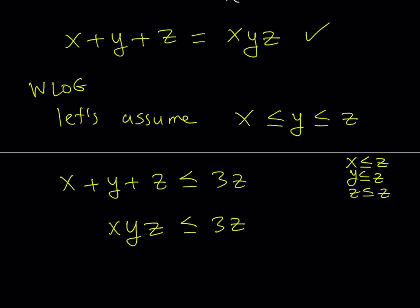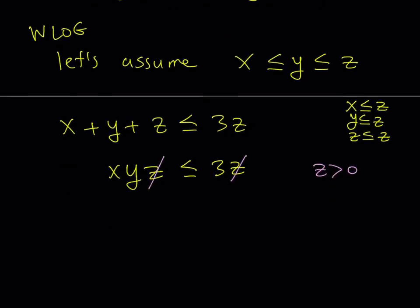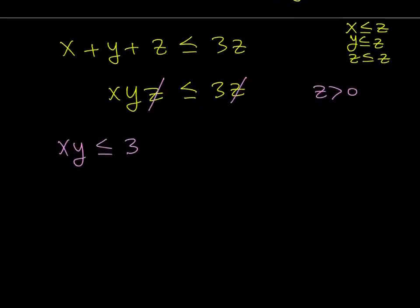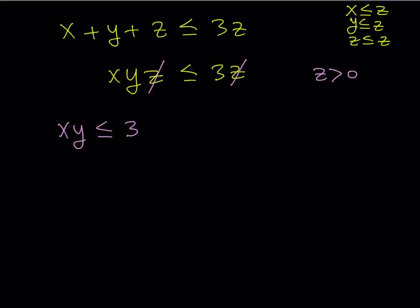I'm looking for positive integer solutions. So z is a positive integer, x is a positive integer, y is a positive integer. That means I can divide both sides by z without any danger. Since z is greater than zero, I can just divide both sides by z very easily. That gives us a really nice inequality. This tells us xy is less than or equal to 3. That's a really nice upper bound. Since x, y are both positive integers, their product is also going to be a positive integer. The maximum it can be is 3. Therefore, the minimum it can be is 1. So let's take a look at the minimum case. We're going to build our case up.